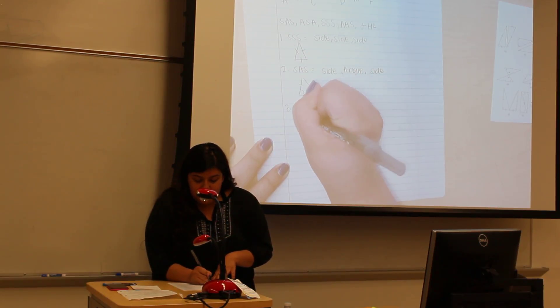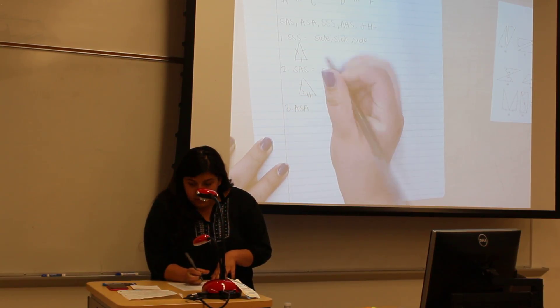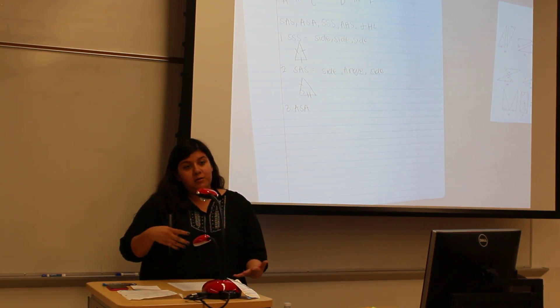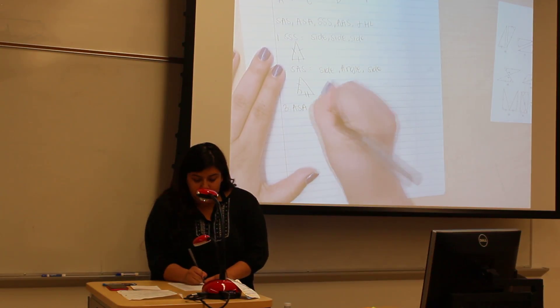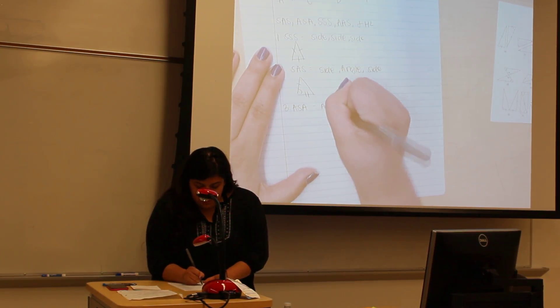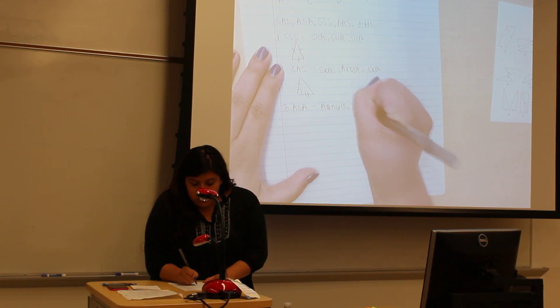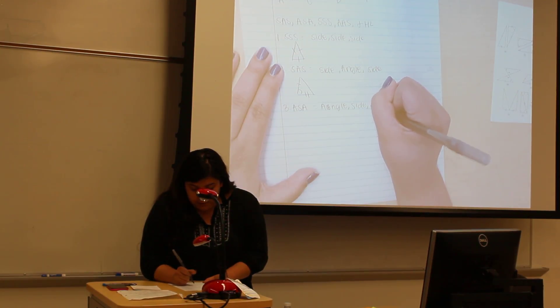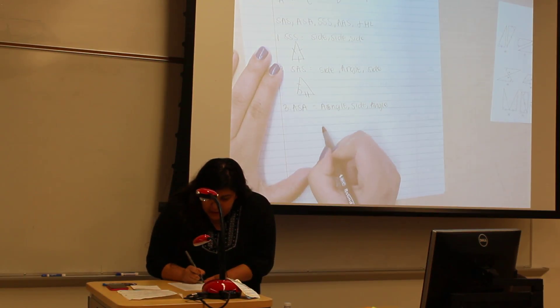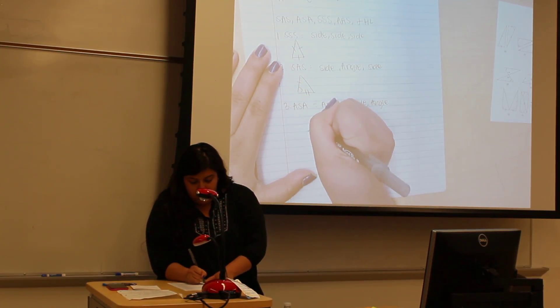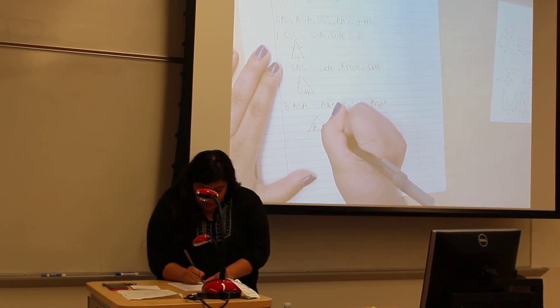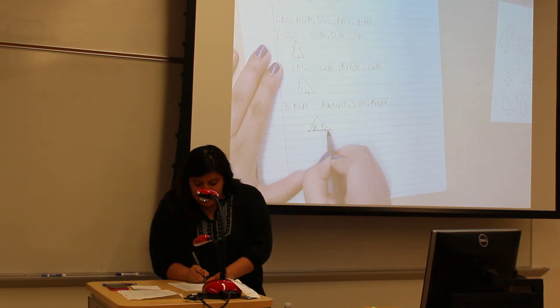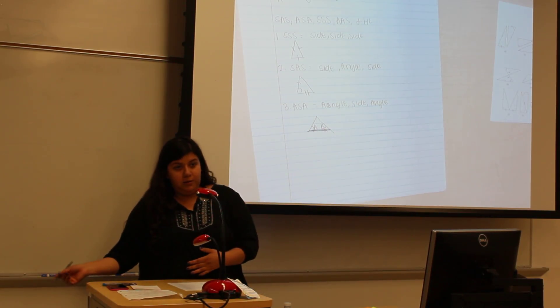Number three is angle-side-angle, which is two angles are equal and one side is equal. For this one, the side is between the angles. So we have an angle here and an angle here, and this side is equal to the corresponding side.